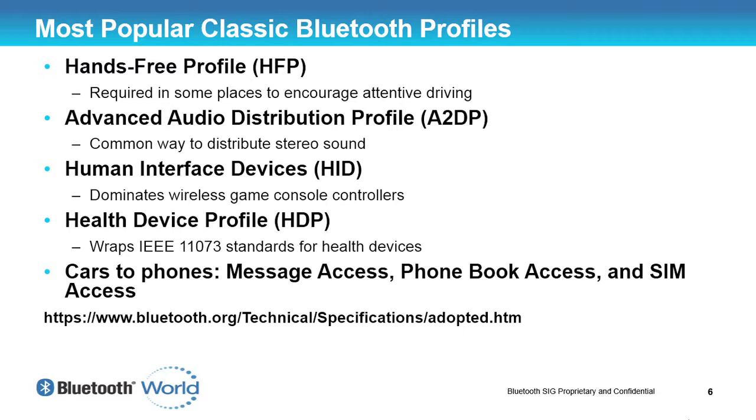Another one I use all the time is the Advanced Audio Distribution Profile, otherwise known as A2DP. This allows very high quality music to be distributed from a source device like a cell phone or computer to a sync device like Bluetooth speakers. My Bluetooth speakers are really small and dinky, but they've got great sound — I can listen to music, radio, or podcasts and fill the room with sound without any cables.